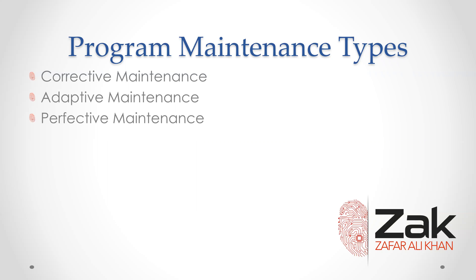Perfective maintenance: the program runs satisfactorily, however there is still room for improvement. For example, the program may run faster if the file handling is changed from sequential to direct access. So that's about it for program maintenance.